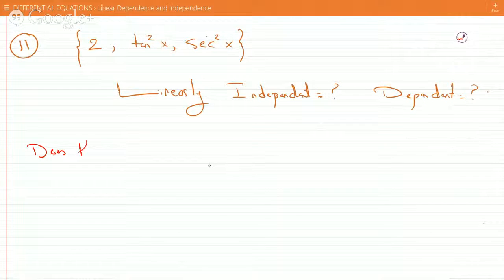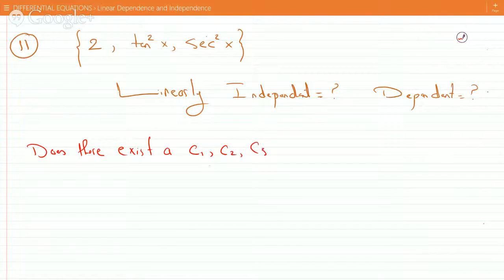Does there exist a C1, C2, C3 where at least one of them is not zero